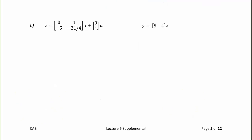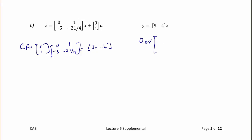For System 2: x-dot = [0, 1; -5, -21/4]*x + [0;1]*u and y = [5, 4]*x. Computing C*A = [5, 4] * [0, 1; -5, -21/4] = [-20, -16]. The observability matrix has rows [5, 4] and [-20, -16]. The determinant is 0, so this matrix is not full rank, and this system is not observable.